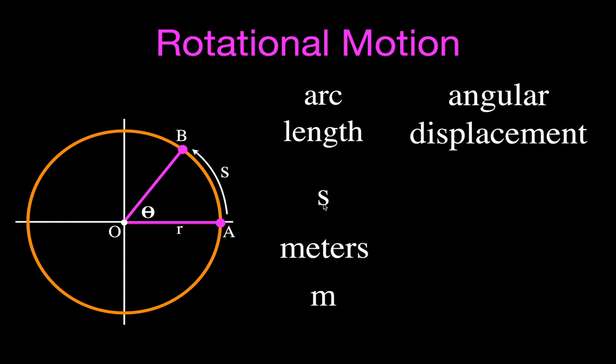The angular displacement is designated as the change in the angle, delta theta. For rotational motion, you're most often going to be making your angle measurements in radians, abbreviated as rad.